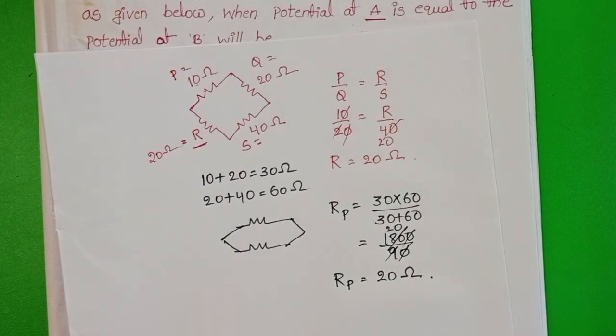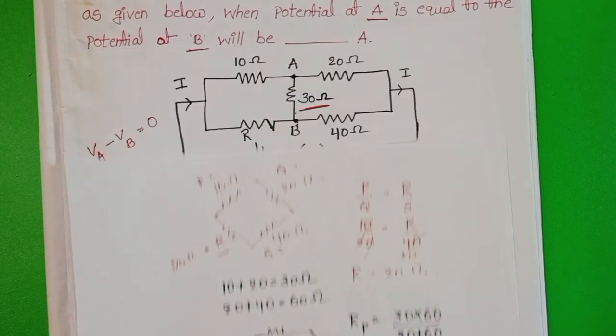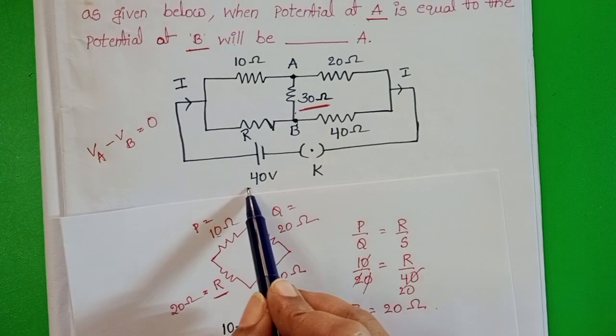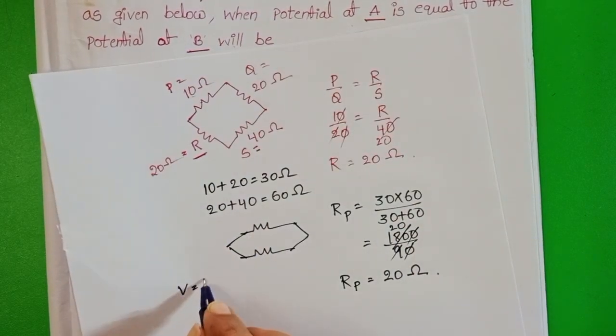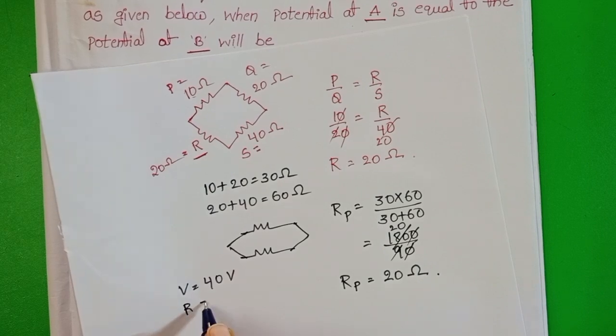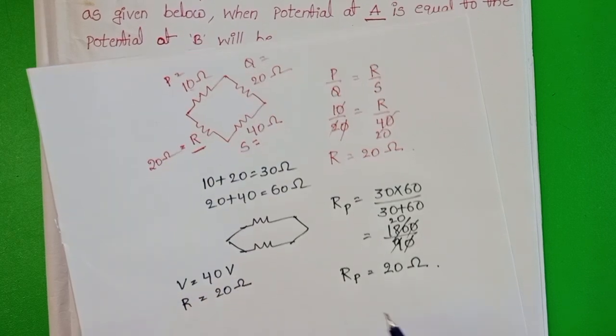Now we want to calculate the current passing through the circuit. Given potential difference equals 40 volt. V equals 40 volt. And equivalent resistance equals 20 ohms.